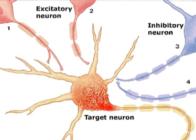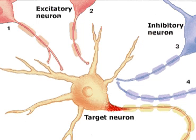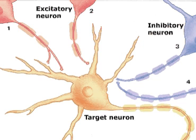If at a given moment the depolarization at the axon hillock exceeds the excitation threshold, an action potential is generated. An action potential then propagates along the axon of neuron 3.